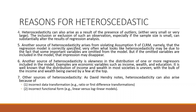If the sample size is small, outliers can substantially alter the results of the regression. Another source of heteroscedasticity is that you have not correctly specified the regression model and have omitted some variables. If these omitted variables are included, it may alter the results. Another source is skewness in the distribution — economic variables such as income, wealth, and education have skewness. The distribution of income and wealth in most societies is uneven. Other sources according to David Henry include incorrect data transformation or incorrect functional form.